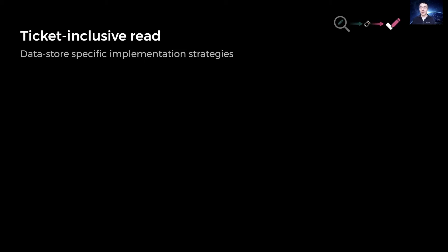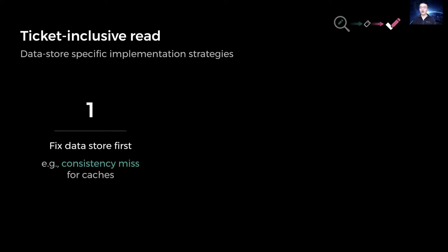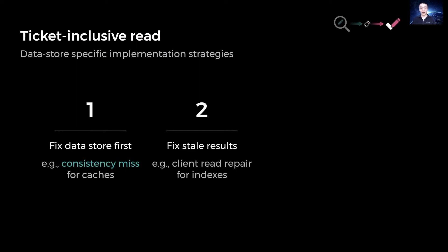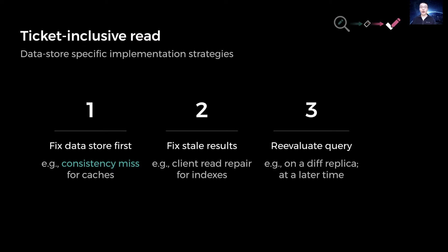For ticket-inclusive reads, datastores need to ensure that read results reflect the writes in the input ticket. This problem is datastore-specific — it's more complicated for global indexes than for caches. Generally, our strategies fall into three categories: we could fix the datastore first, ensuring the local data is fresh enough before serving the read; we could fix stale results after reading from a potentially stale replica, for example using client-side read repair for indexes; or as a safe fallback, we could always reevaluate the query on a different replica or at a later time. No matter the strategy, we need to make a local decision about whether to do extra work, and the answer needs to be no most of the time.